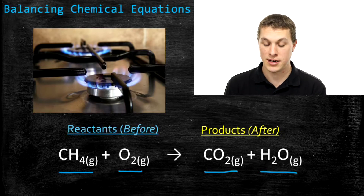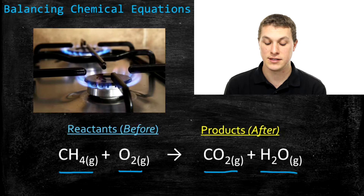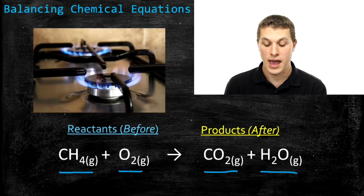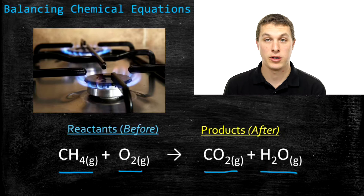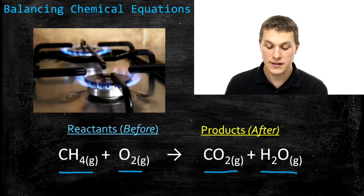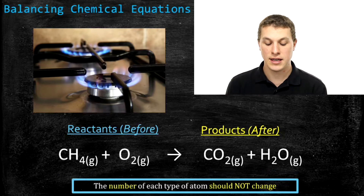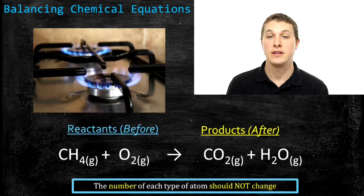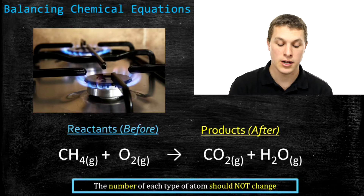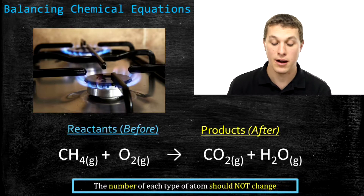This combustion reaction is telling you what we're doing before and after. We put in methane and oxygen, mix those things together, burn them, and it spits out carbon dioxide and water. That's what a chemical reaction tells us: add these things together — we call those reactants — and it'll spit out products. In a chemical reaction, all that's happening is atoms are being shuffled around and paired up with different atoms.